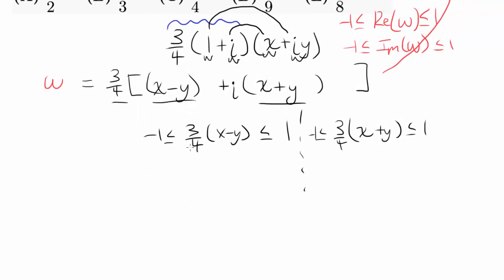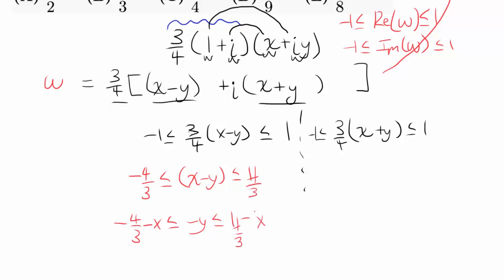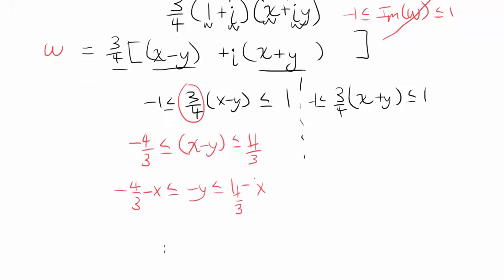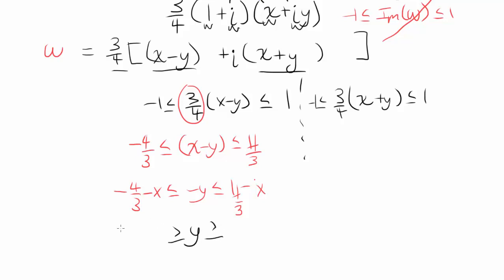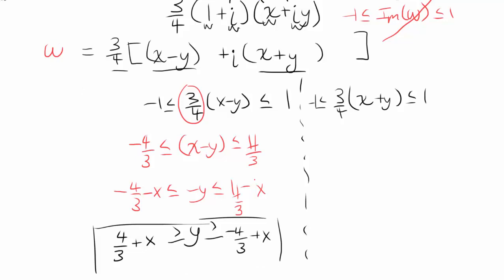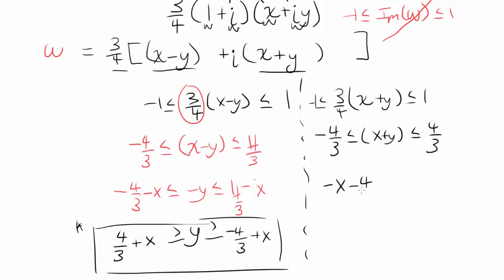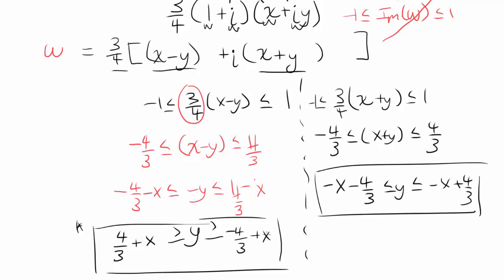Multiplying through by 4/3 gives us negative 4/3 ≤ x minus y ≤ 4/3 and negative 4/3 ≤ x plus y ≤ 4/3. Isolating y from the first inequality yields x minus 4/3 ≤ y ≤ x plus 4/3. From the second: negative x minus 4/3 ≤ y ≤ negative x plus 4/3. So we have four constraint inequalities to work with.